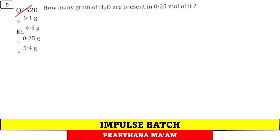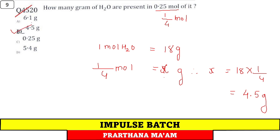Question number 9. How many gram of H2O are present in 0.25 mol of it? This is 1 by 4 mol. 1 mol water has mass 18 gram. We need to find 0.25 mol, which is x gram. Therefore x equals 18 into 1 by 4. This is 4.5 gram.